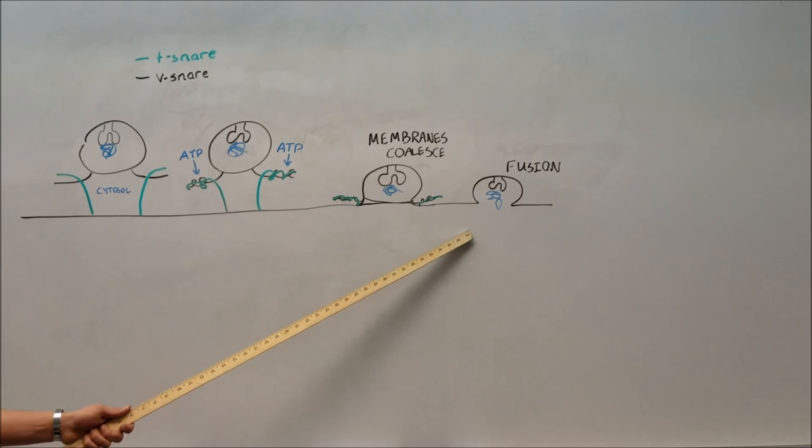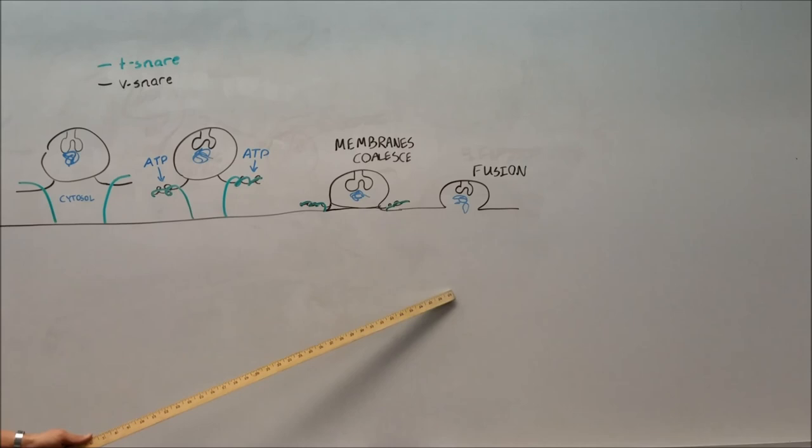Once all of the water is removed between the two membranes, fusion occurs. The contents of the vesicle are released into the target membrane, and the receptor returns to the Golgi apparatus to pick up the next protein or lipid that it will be carrying.